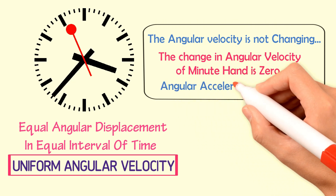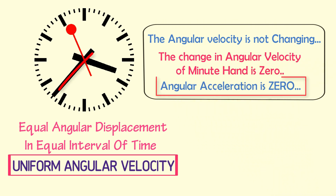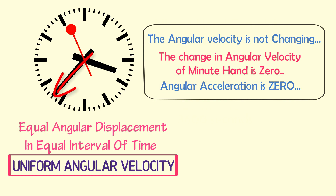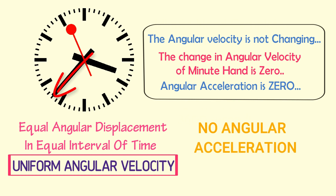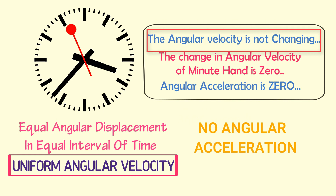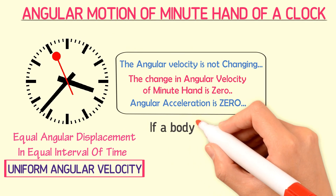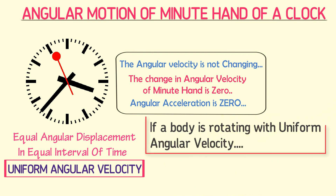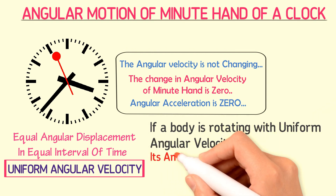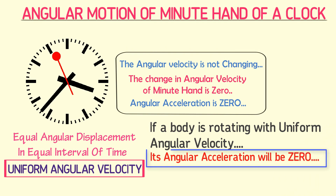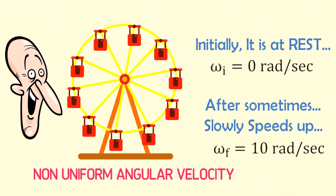Therefore, the angular acceleration of the minute hand of a clock is zero — it does not possess angular acceleration, because its angular speed is not changing and it moves with uniform angular velocity. Remember: if a body rotates with uniform angular velocity, its angular acceleration will always be zero.